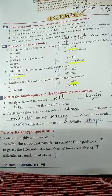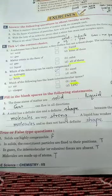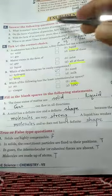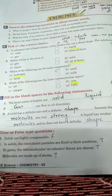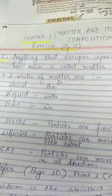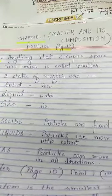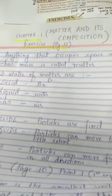So, now let us start with the question answers. Answer the following questions. First one. What is matter? Give the states of matter with an example of each. First answer. Anything that occupies space and has mass is called matter.